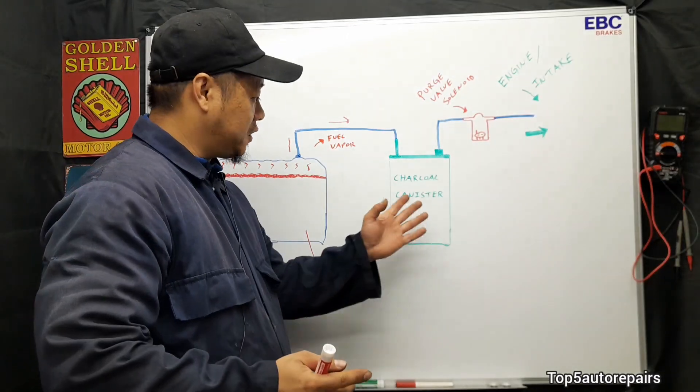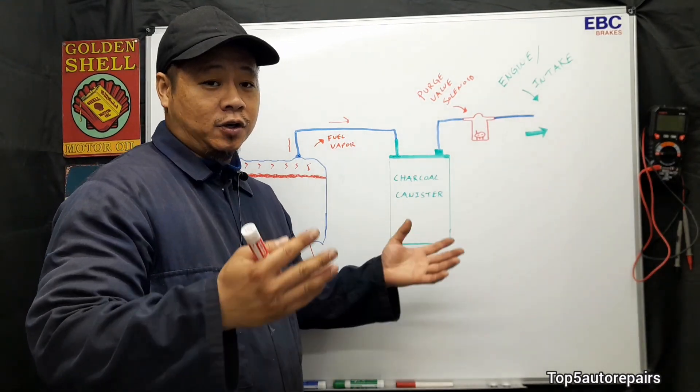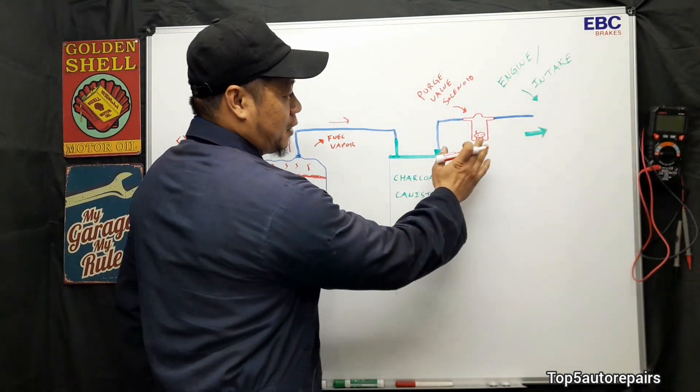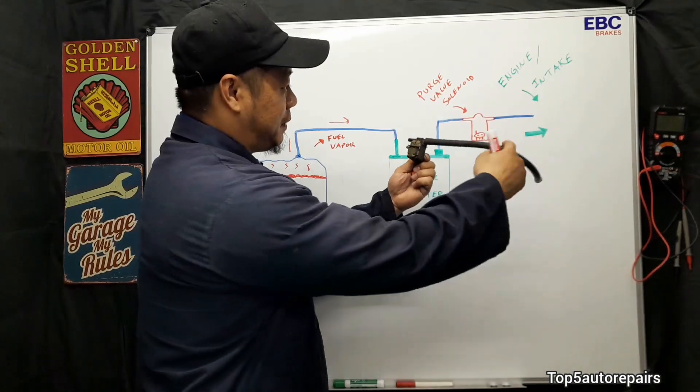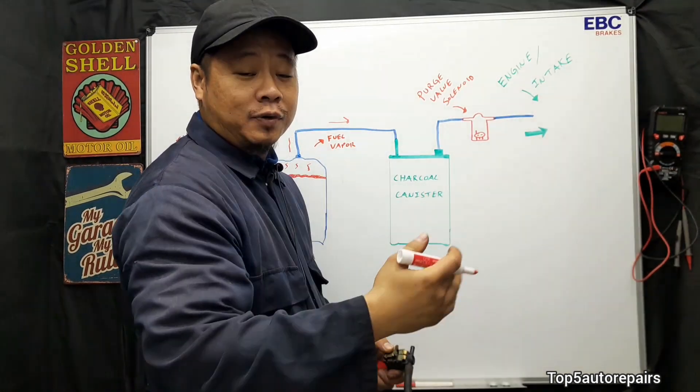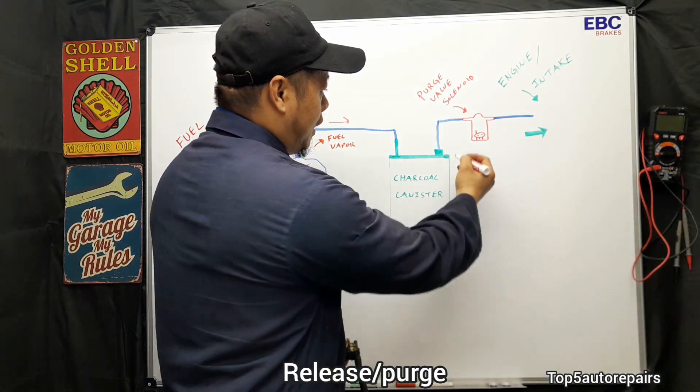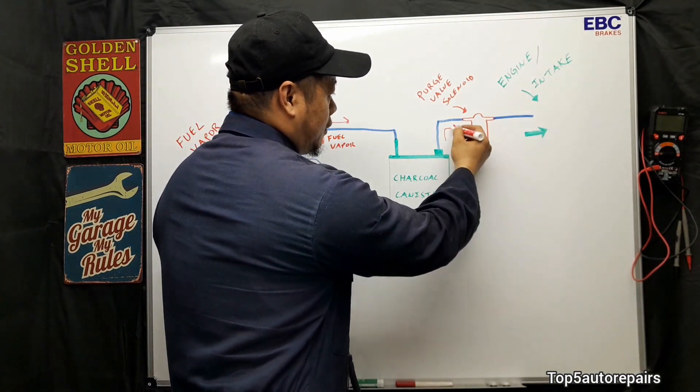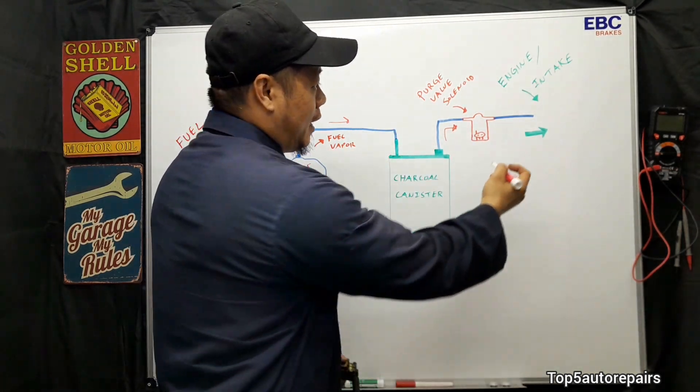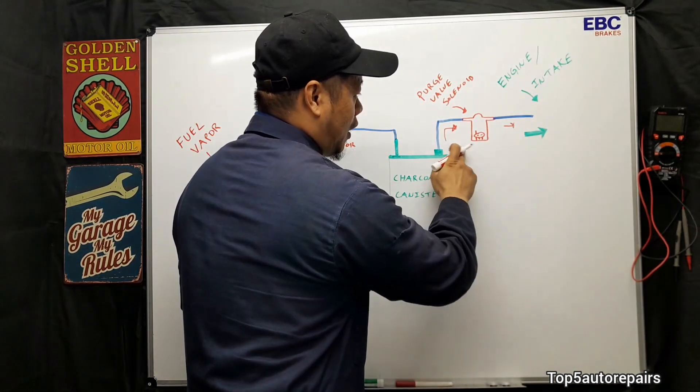So that fuel vapor that's stored in here eventually needs to go somewhere. So what happens is you have this purge valve solenoid over here. So when the charcoal canister is ready to release the fuel vapor, it's going to release the fuel vapor through here. The purge valve solenoid is going to open up and allow fuel vapor to travel through the hose.